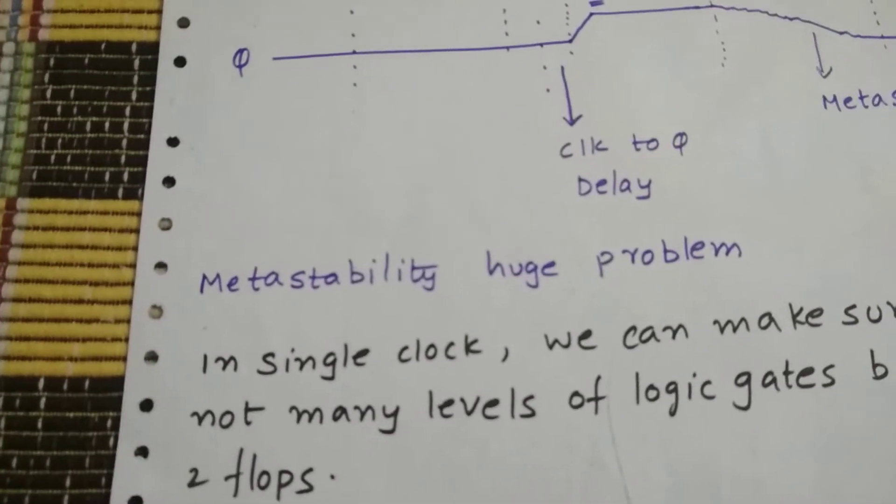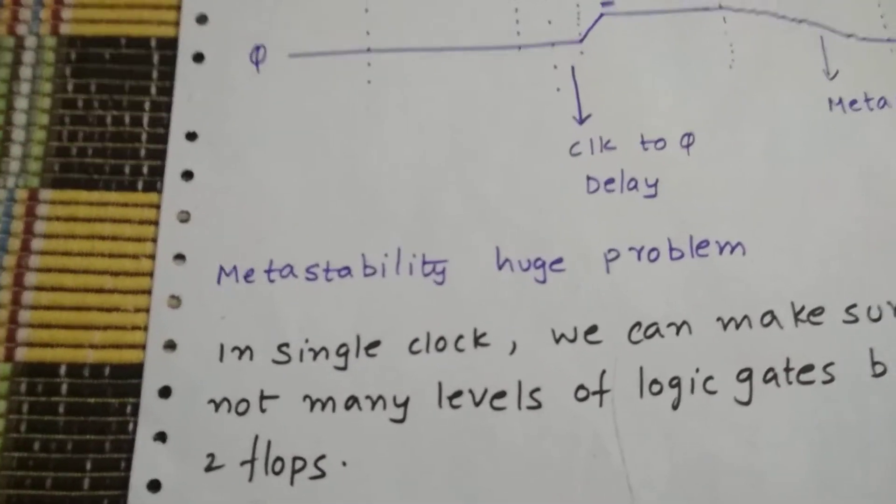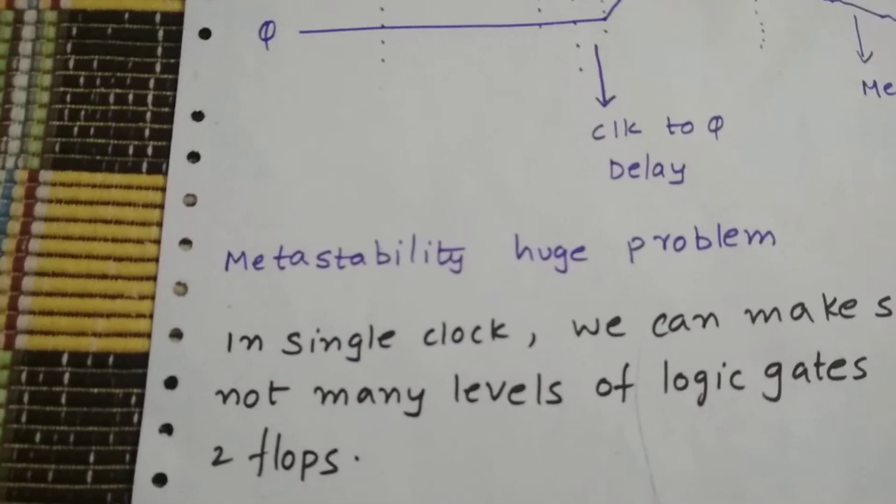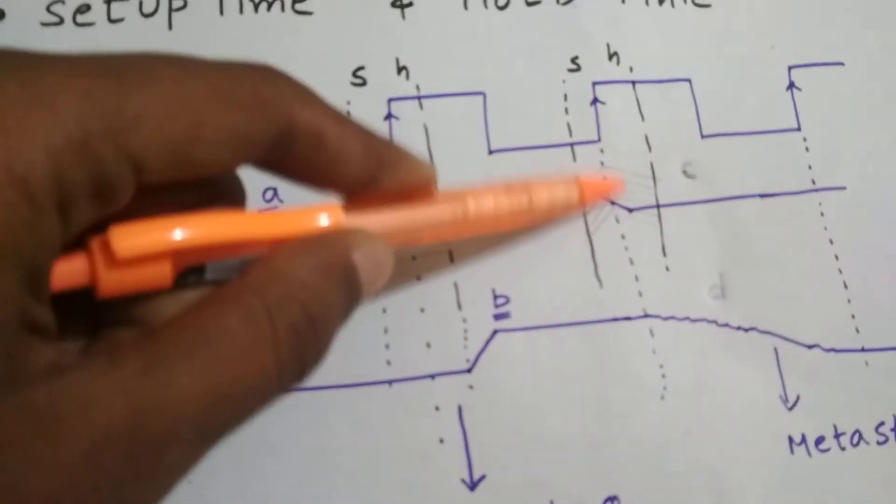In a single clock, we can make sure not many levels of logic gates are there between two flops, so that the input doesn't change in this period. Okay?